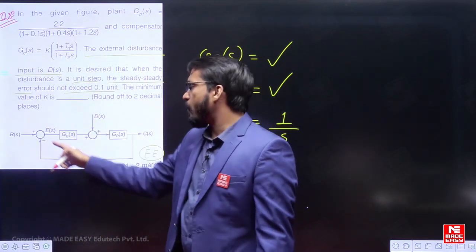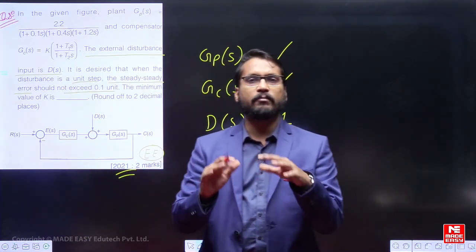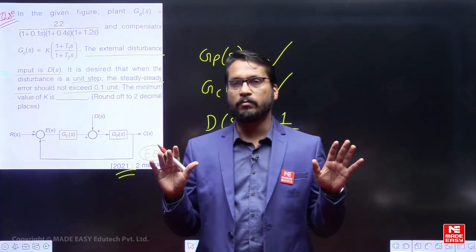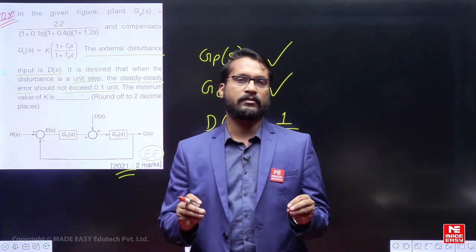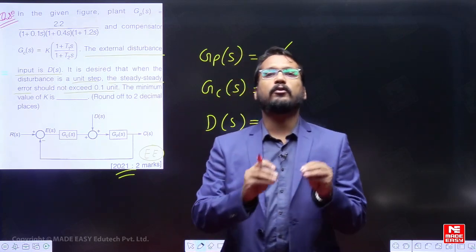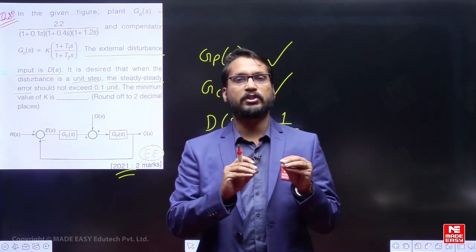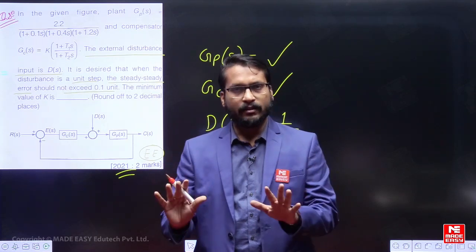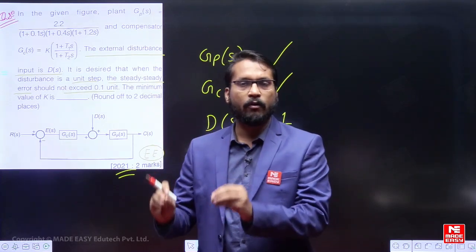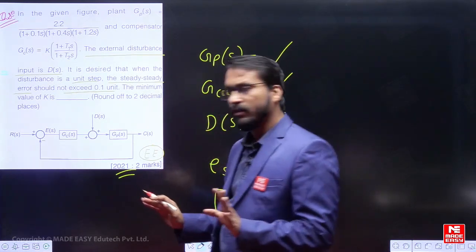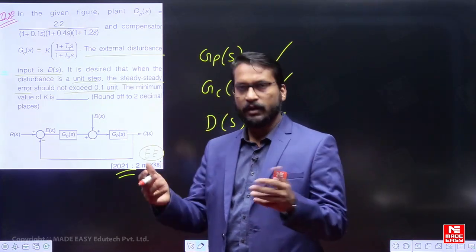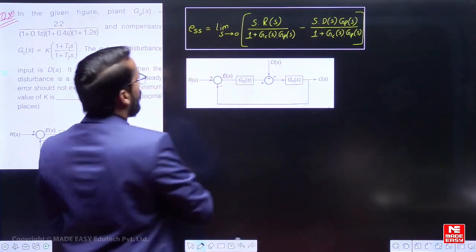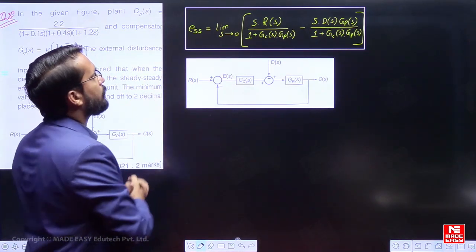In this type of question, students generally memorize a formula. But there is no need to mug up any formula, because the basic relations for negative feedback and positive feedback closed-loop control systems are well known. If you follow proper steps, you can easily derive the relation in the examination hall itself. I am going to display the formula that students generally memorize for steady-state error.